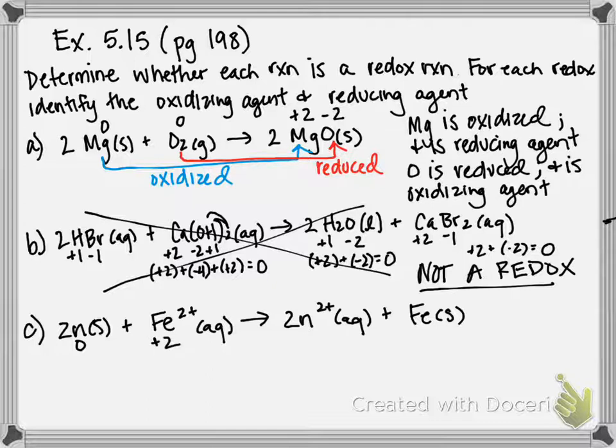Zinc with a two plus written next to it tells us that the oxidation state is plus two. And then iron as a solid, no charge written next to it, it's by itself, that's going to have an oxidation state of zero.